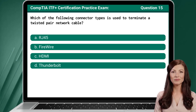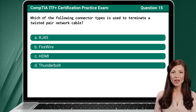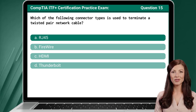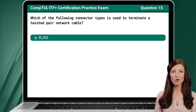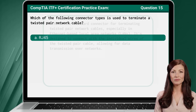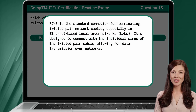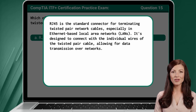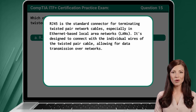Question 15. Which of the following connector types is used to terminate a twisted pair network cable? The answer is A: RJ45. RJ45 is the standard connector for terminating twisted pair network cables, especially in Ethernet-based local area networks. It's designed to connect with the individual wires of the twisted pair cable, allowing for data transmission over networks.